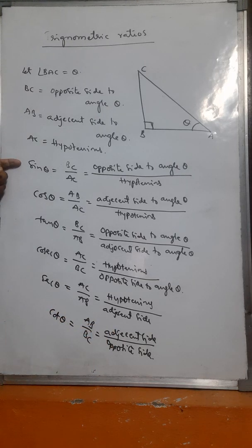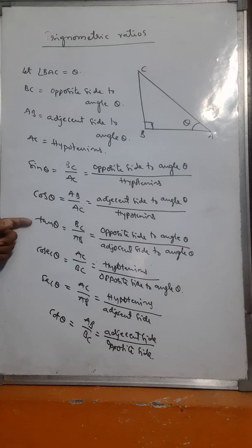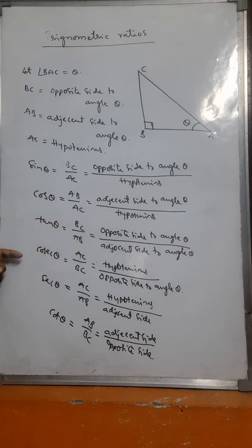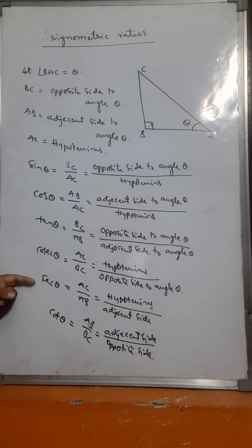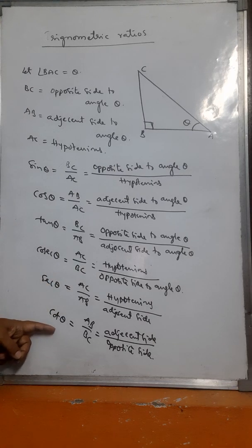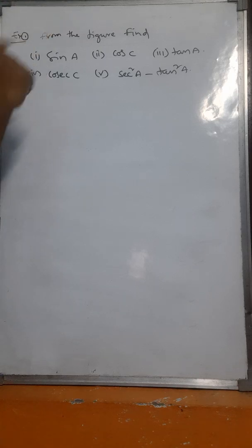So: sine theta equals opposite side by hypotenuse, cos theta equals adjacent side by hypotenuse, tan theta equals opposite side by adjacent side, cosec theta equals hypotenuse by opposite side, sec theta equals hypotenuse by adjacent side, and cot theta equals adjacent side by opposite side. Now let's look at an example from the figure.